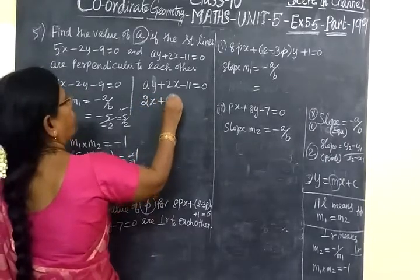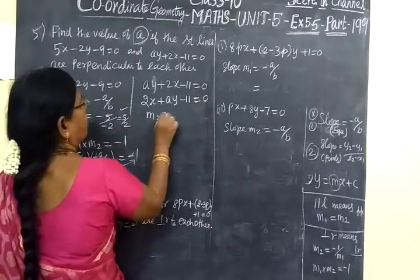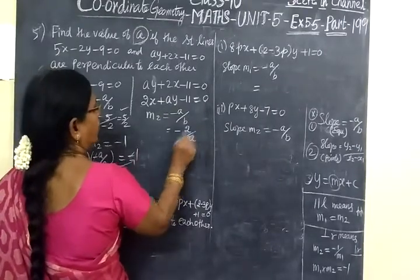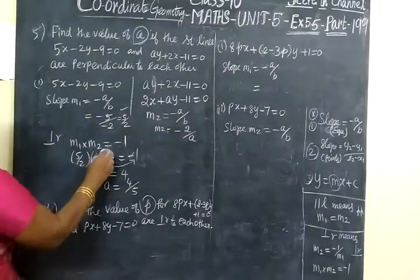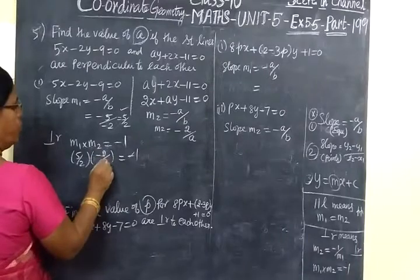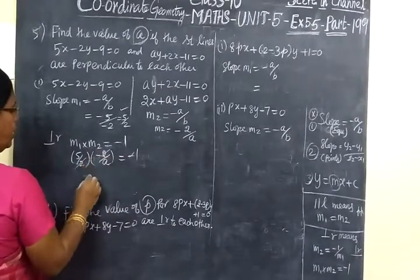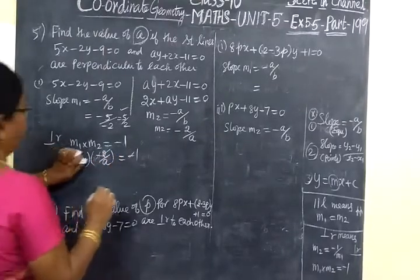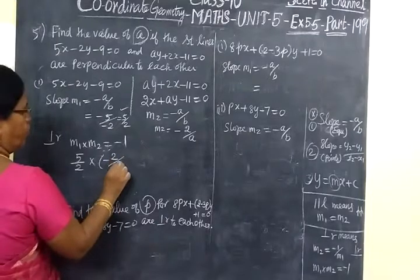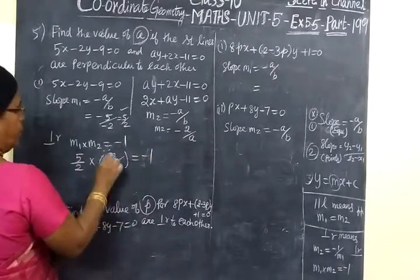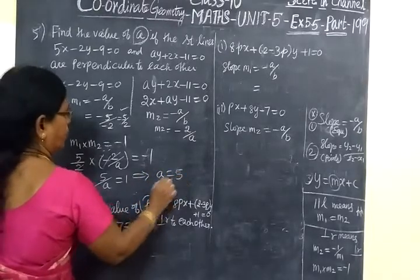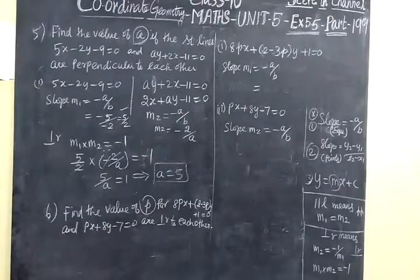Now AY plus 2 here. You should write this in the standard form: X term, Y term, then constant term equal to 0. So slope form was minus A by B. Minus A value 2, B value A. So this is M2. We correct it. M2 equal to minus 2 by A. So 2s cancel, minus minus cancel. 5 by A equal to 1. So it implies A equal to 5. Now we check the answer. A equal to 5, so this one correct.